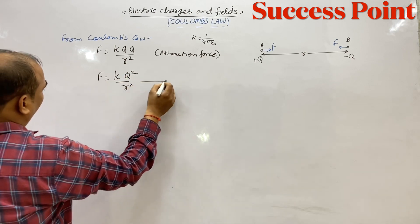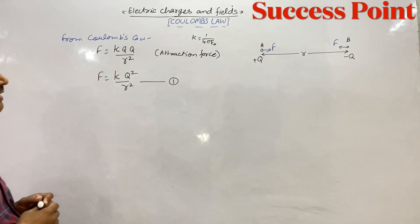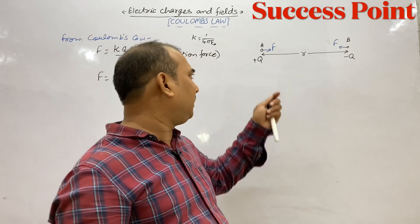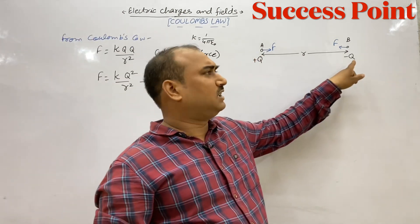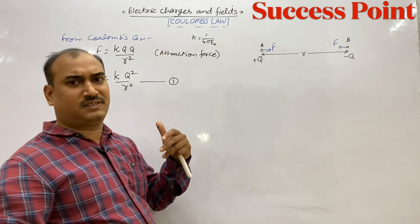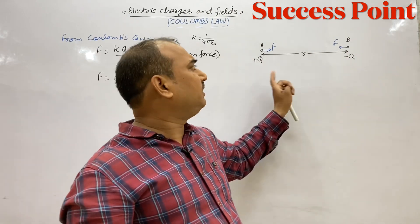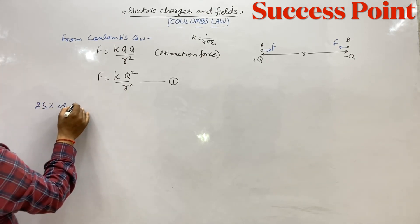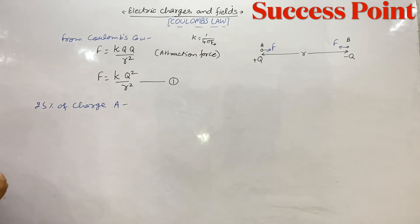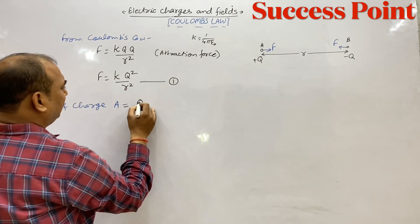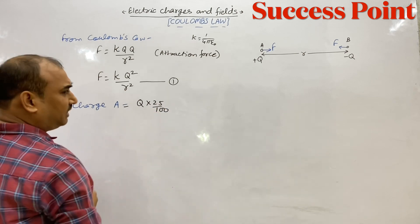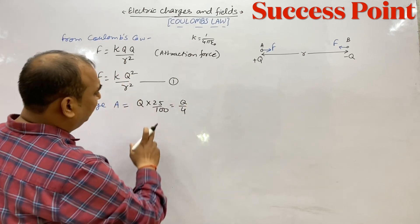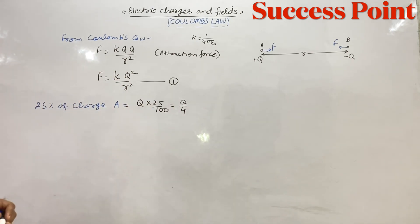Second condition: 25% of charge A is transferred to charge B. A का 25% charge निकाला गया होगा A से और वो B में दे दिया गया। 25% of Q means Q × 25/100 = Q/4। तो A से Q/4 निकाला गया।